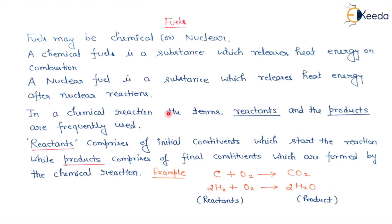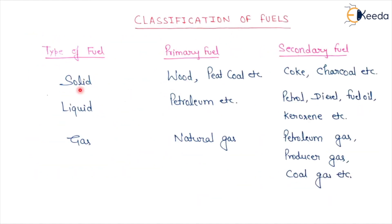There are many types of fuels — such as solid fuel and liquid fuel — depending upon the physical state. There are 3 types of fuels: solid fuels, liquid fuels, and gaseous fuels. There is also another classification: primary fuels and secondary fuels. Primary fuels are raw fuels that we can use directly, such as wood and peat coal. Petroleum is a primary liquid fuel, and natural gas is a primary gaseous fuel.